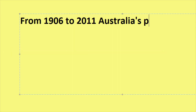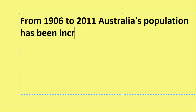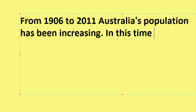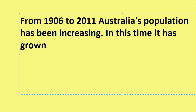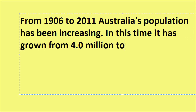Write a generalisation to show the trend of your line graph. For example, from 1906 to 2011, Australia's population has been increasing. In this time, it has grown from 4 million to 22.4 million.